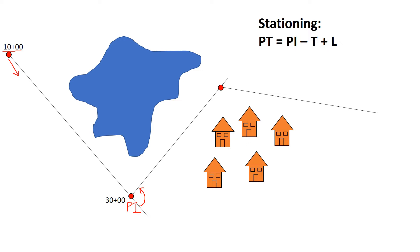As we determine our curve parameters, we're still in a preliminary traverse dealing with tangents, but we want our stationing along the curves — along the center line of the roadway. Those are the meaningful values. When we reach the end of the full alignment, following the preliminary traverse the whole way doesn't match up with the center line of the roadway. We need to follow the curve, so the station of the PT equals the PI minus the tangent length T, plus the length of curve L.